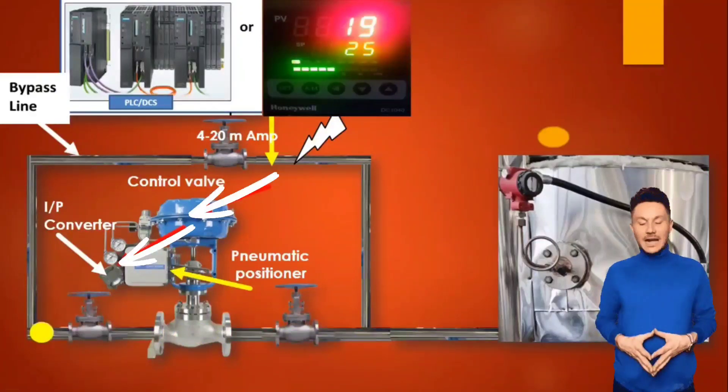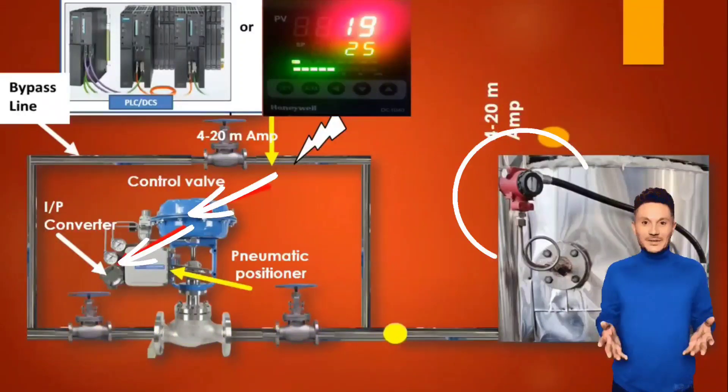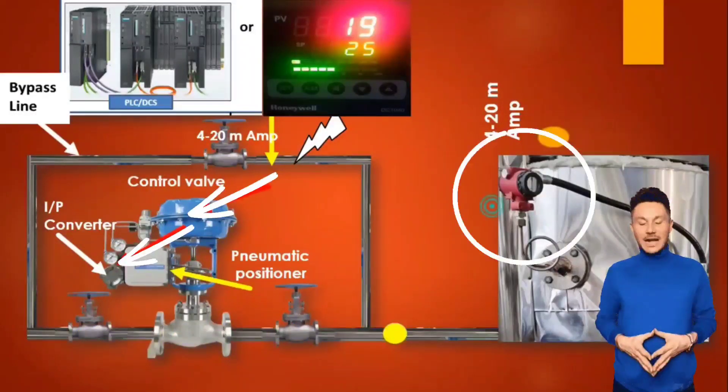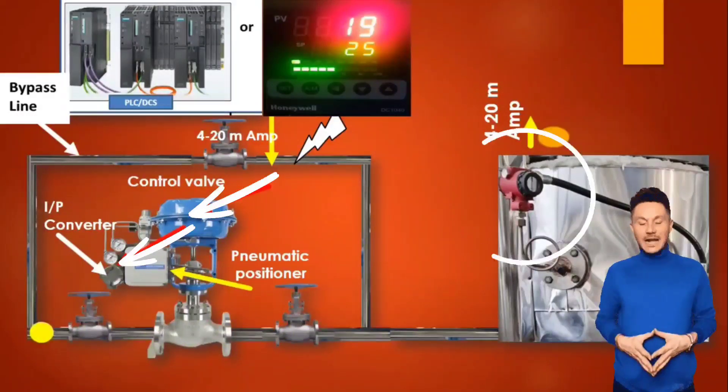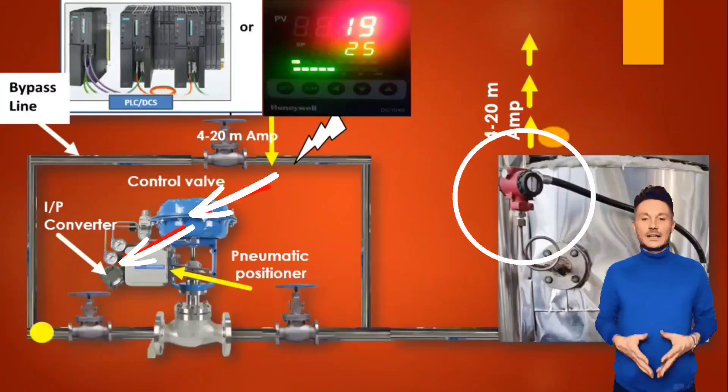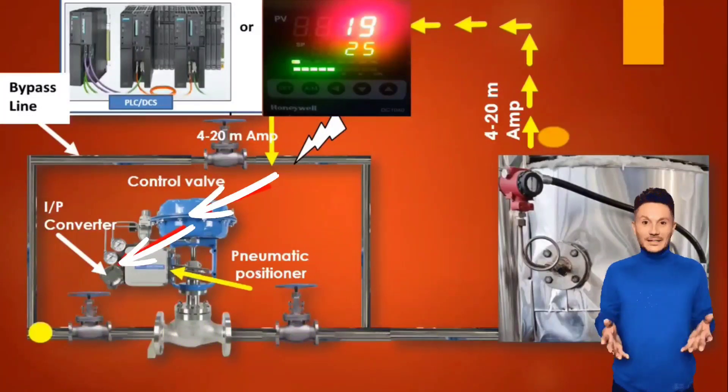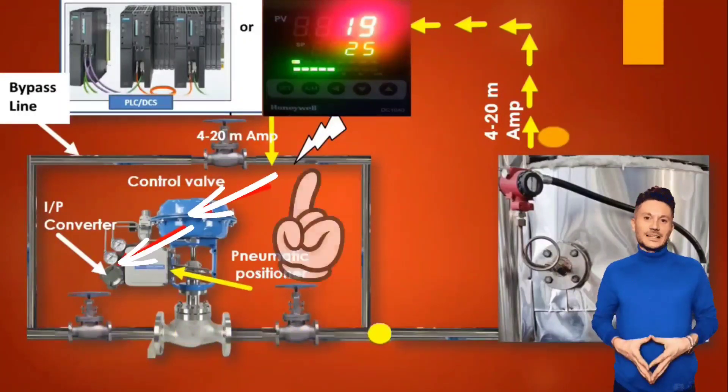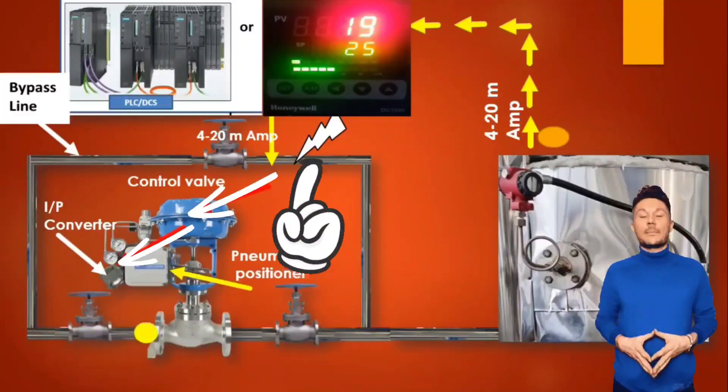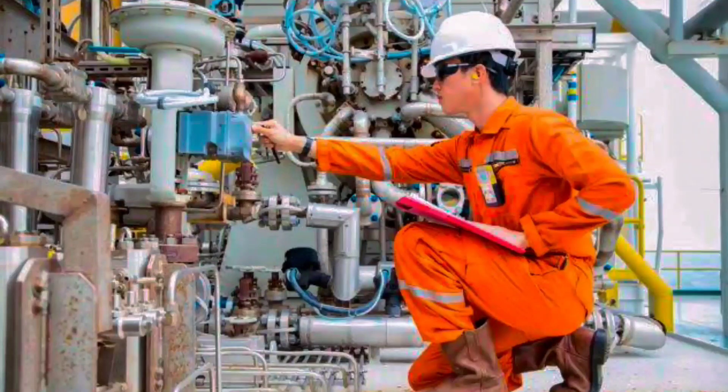Sensors are used to measure parameters. This sensor normally gives 4 to 20 mA signal output. The 4 to 20 mA signal from the sensor is sent to the controller as a feedback. So friends, in this way a control loop is formed. One point you need to keep in mind that a bypass line is also provided with the control valve so that in case of control valve failure, the parameters can be manually maintained from the bypass line.